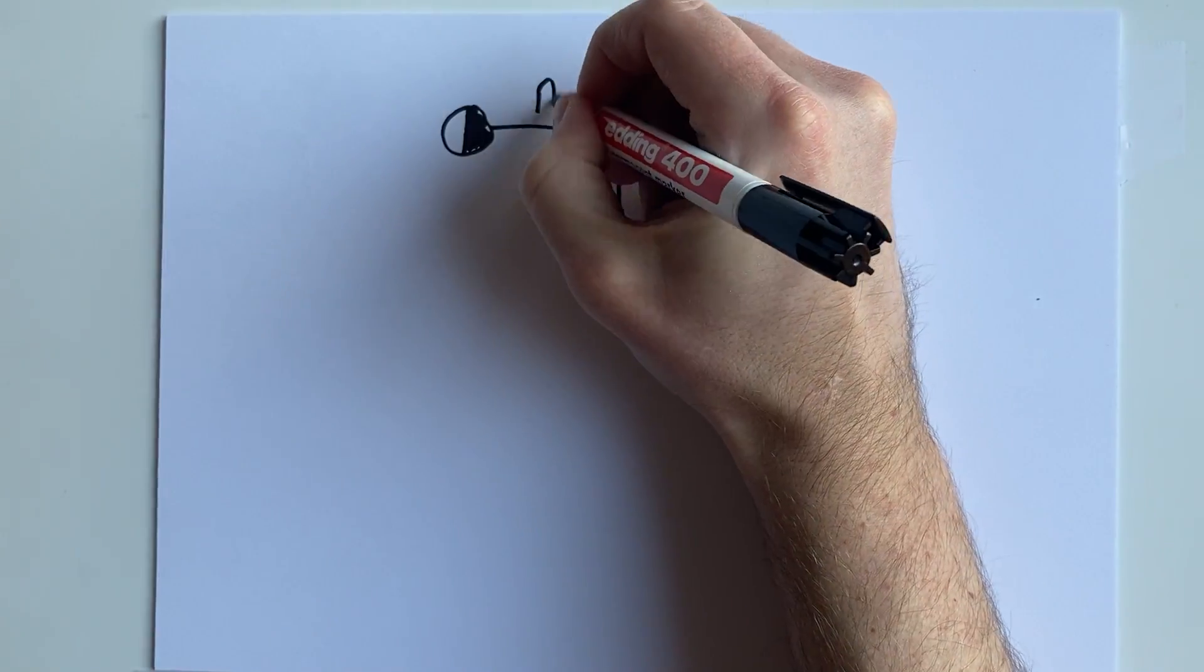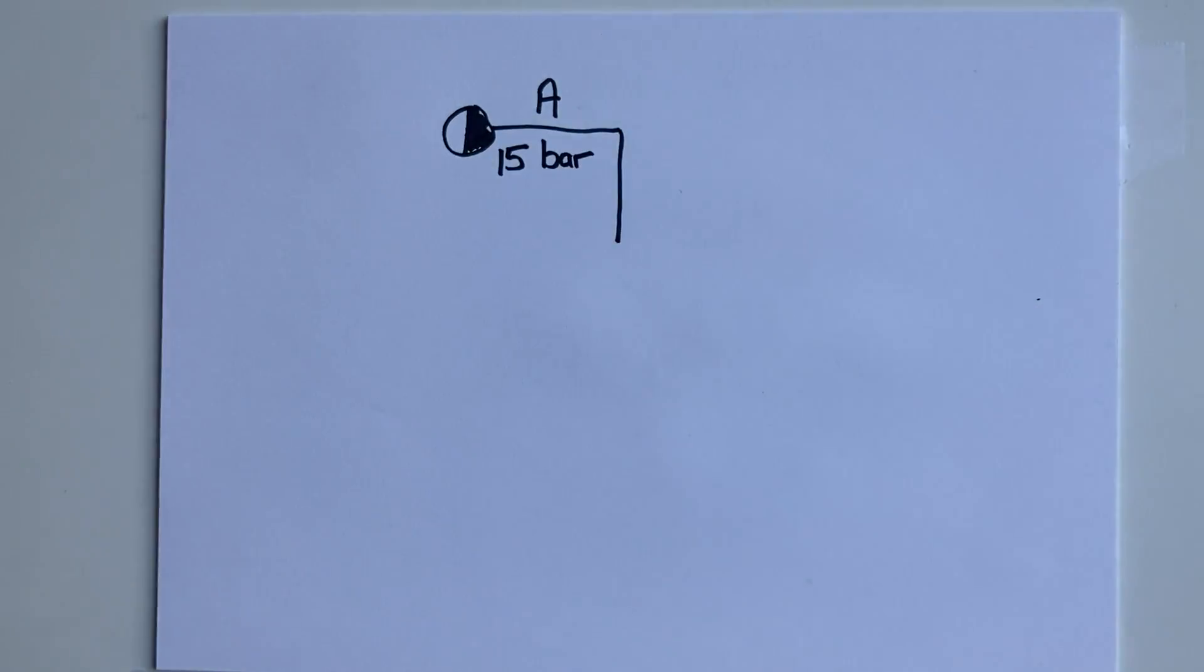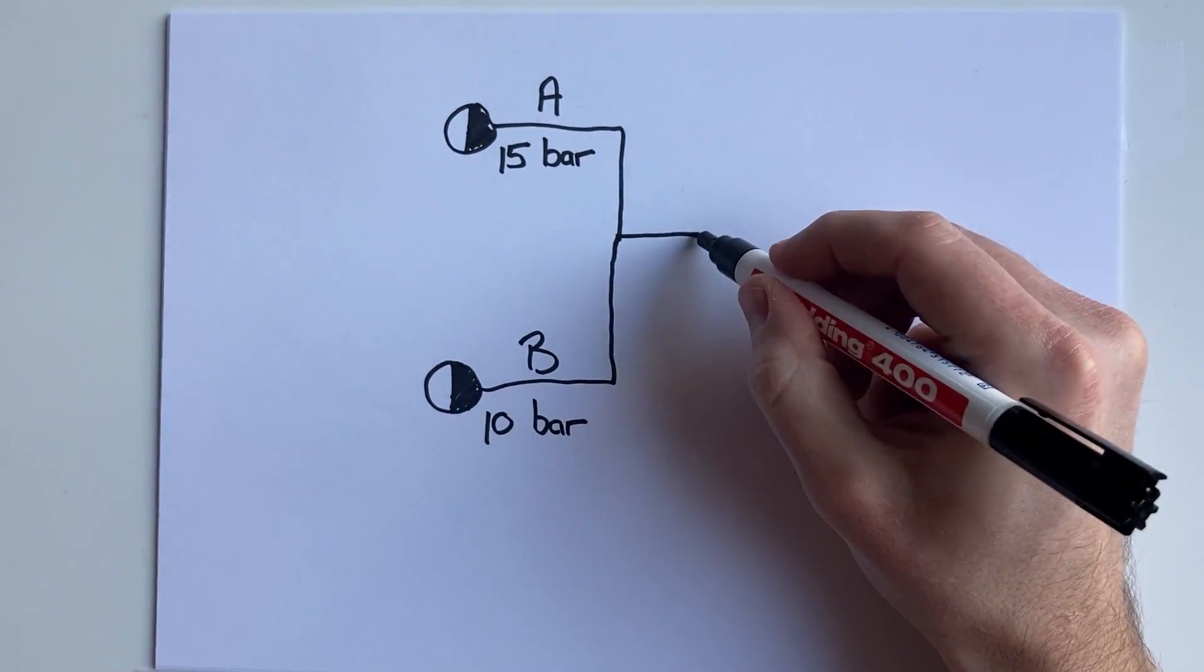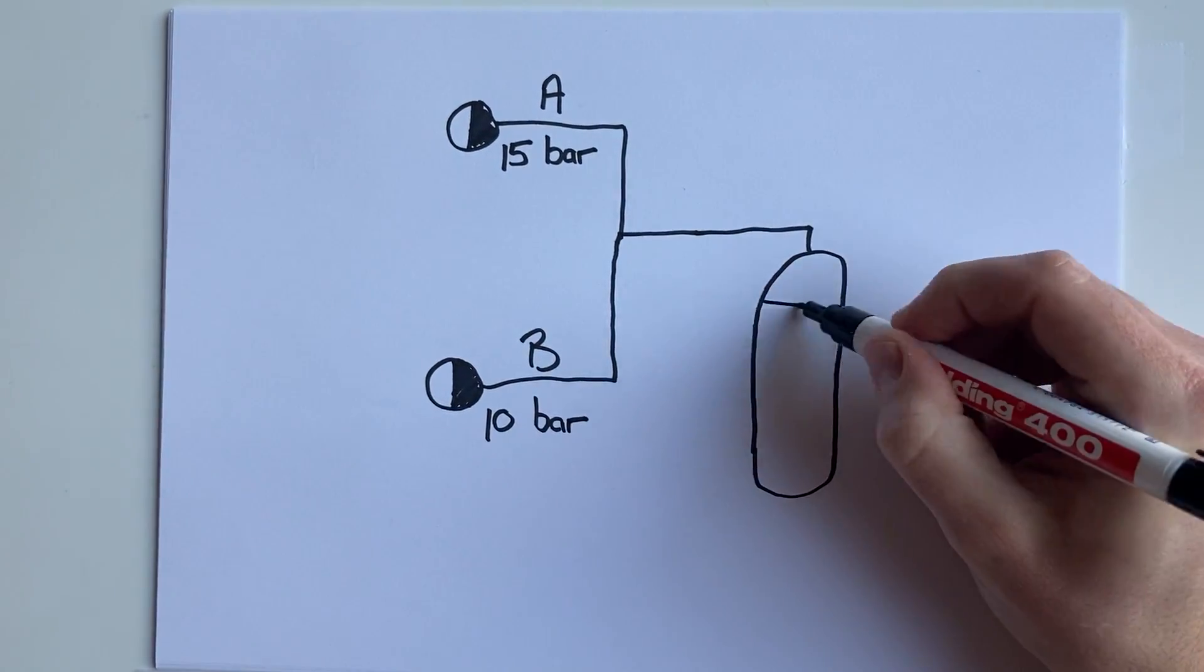The assignment gave us the pressures of the two feed streams. Let's say stream A has a pressure of 15 bar and stream B has a pressure of 10 bar. We were able to calculate the flow rate of each stream because we knew exactly how much production rate we wanted.